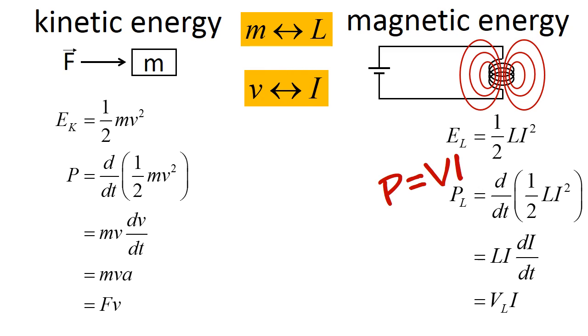We can also see how velocity in the mechanical system is comparable to current in the electrical system, and how the time derivative of position is comparable to the time derivative of charge, or equivalently, position is comparable to charge.